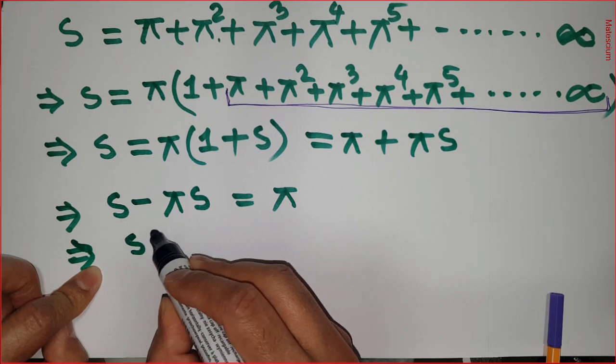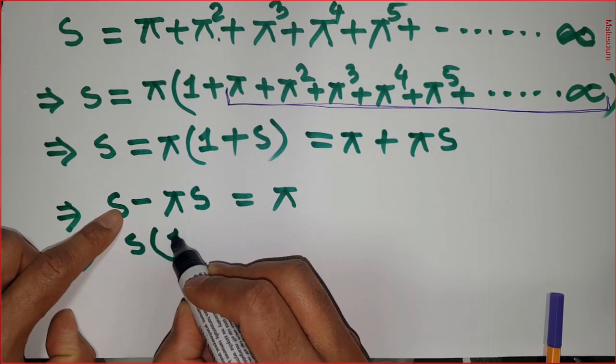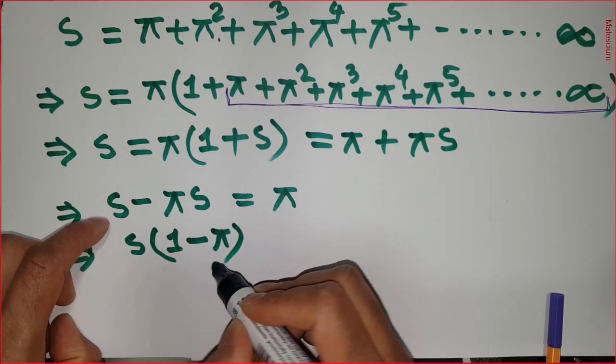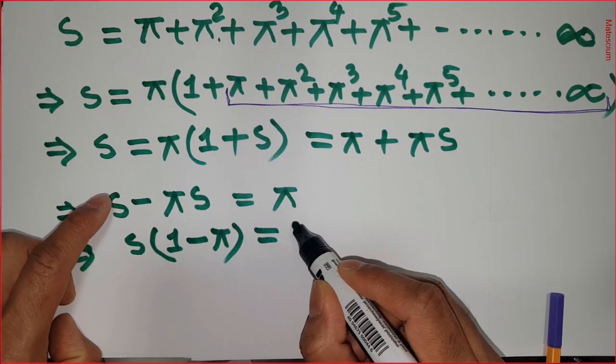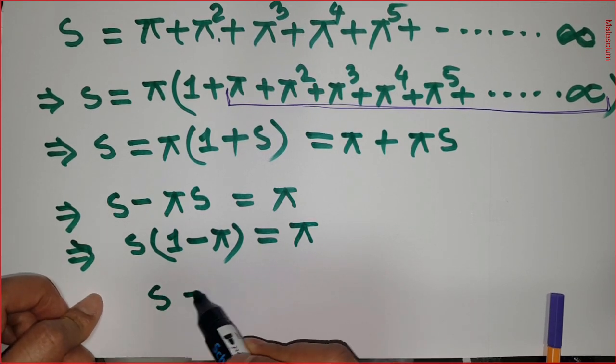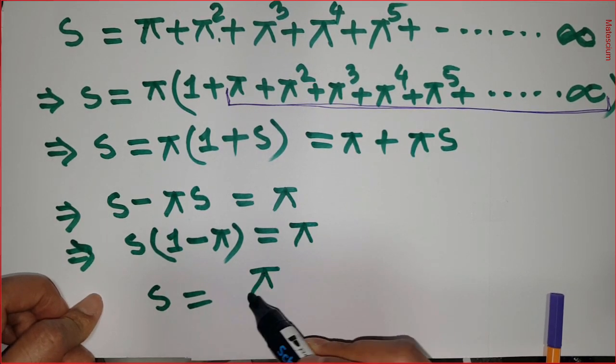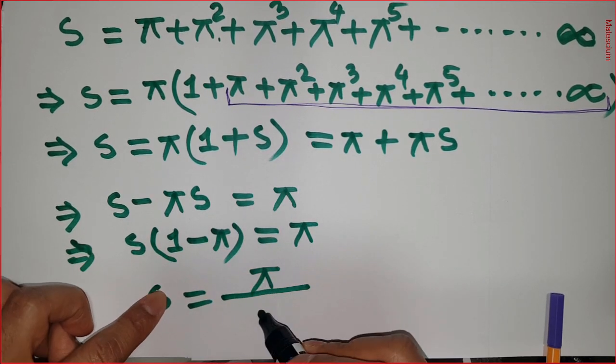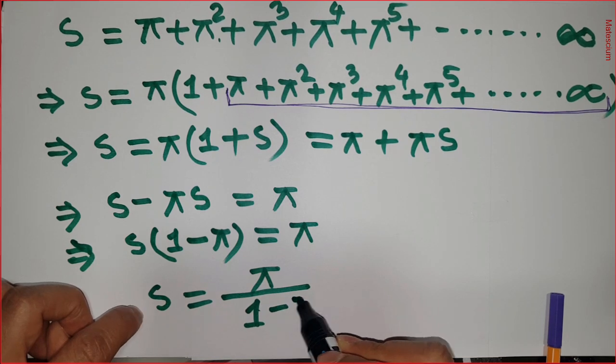Now S minus πS equals π. In the next statement I can take one S common from here, so S common means this becomes 1 minus this becomes π on the left-hand side, and the right-hand side is only π.